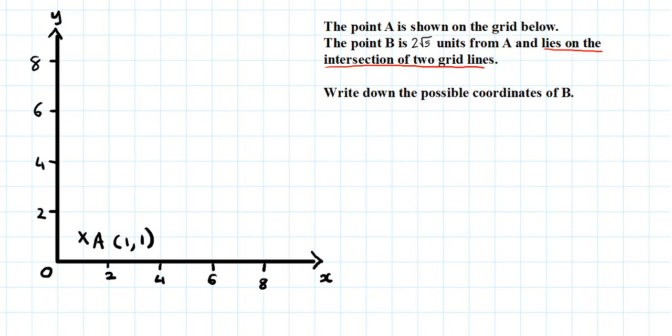Salaam alaikum everyone. So I've got this question here. It's a GCSE question. Let's get started. Let's try and have a go at it. The point A is shown on the grid below. The point B is two root 5 units from A and lies on the intersection of two grid lines. Write down the possible coordinates of B.